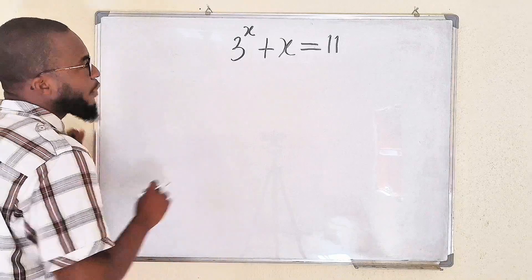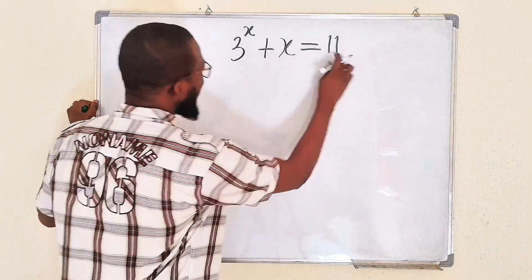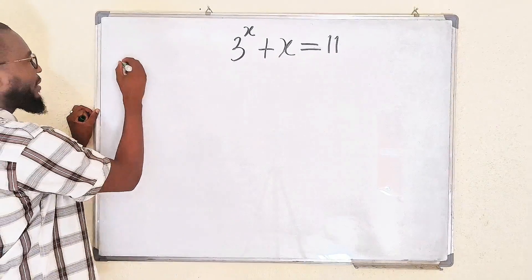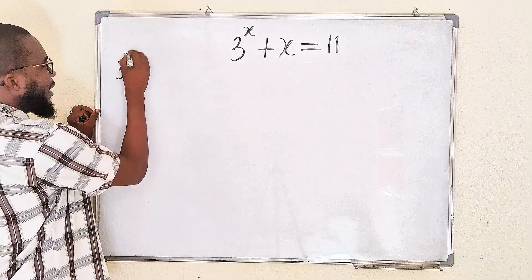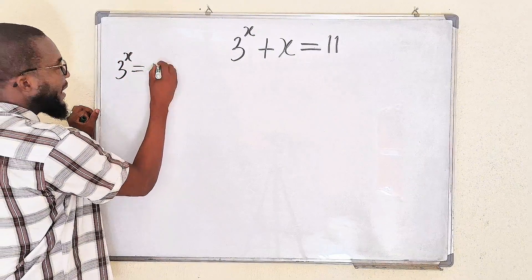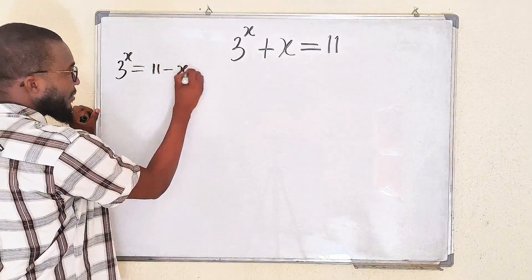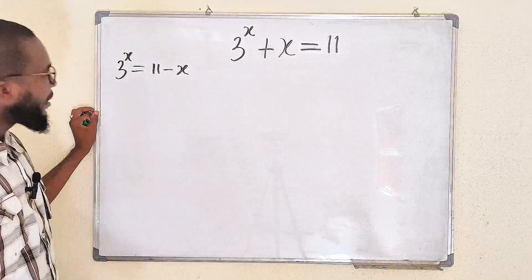Alright, first of all, I would like to take x to the other side. So on the left-hand side, we have 3 to the power of x. This is equal to 11 minus x, as x crosses over.